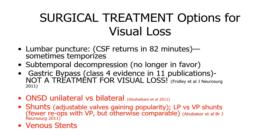Three surgical procedures are available for vision-threatening IIH: optic nerve sheath fenestration/decompression, shunting — either lumbar peritoneal or ventricular peritoneal — with programmable valves now more popular, and venous sinus stenting. Gastric bypass is only for weight loss, not directly for visual loss. Historical skull bone removal is no longer performed.